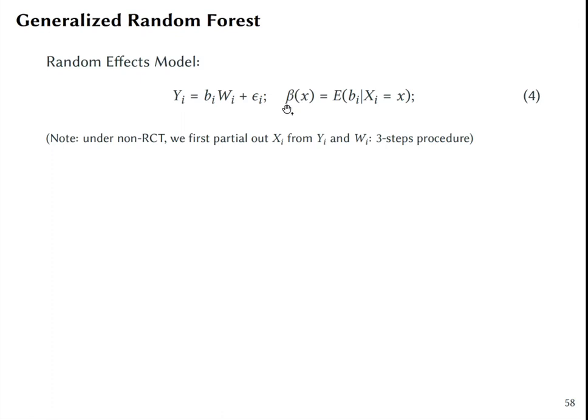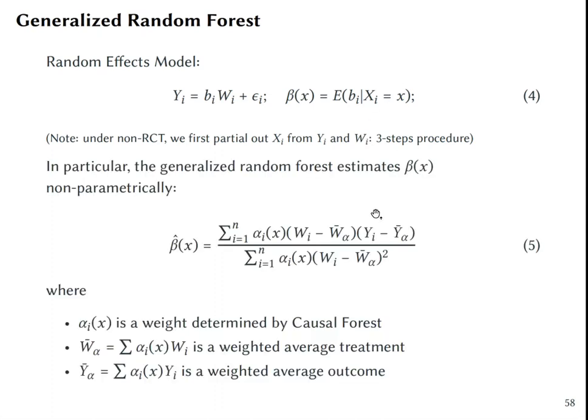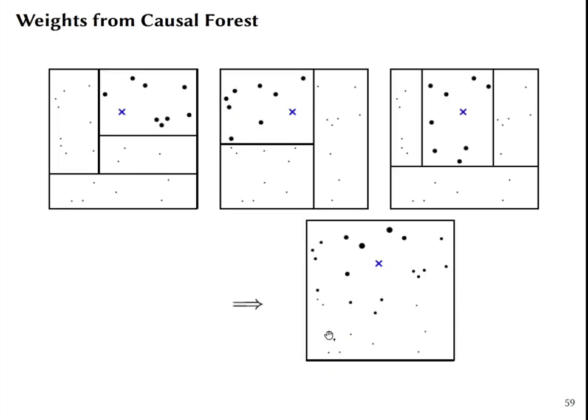So notice that what we are interested in is the prediction of the treatment effect for someone with characteristics X, based on what we estimate for different people with similar characteristics. In particular, the generalized random forest estimates beta X non-parametrically. I know that this formula can look messy. The general intuition is as follows.